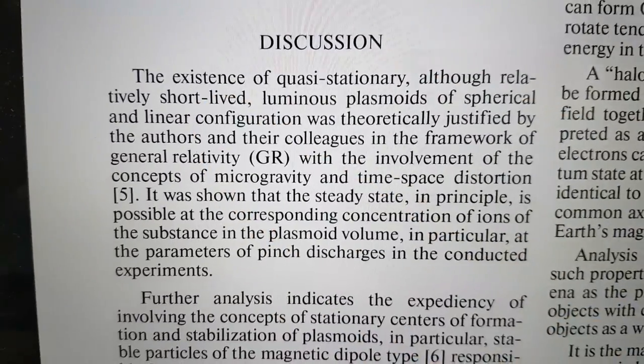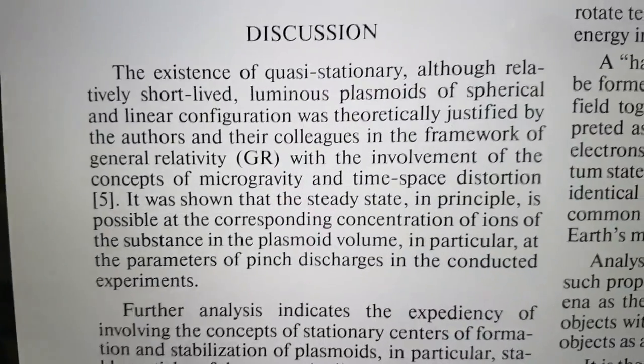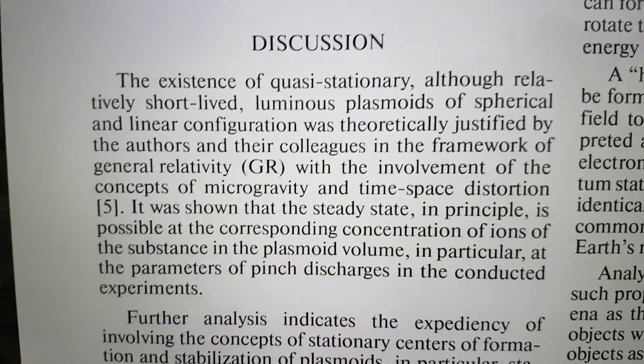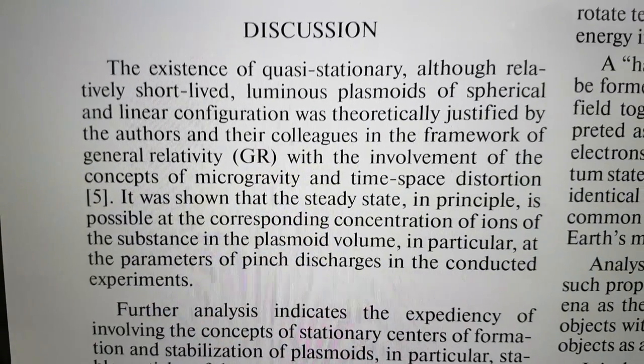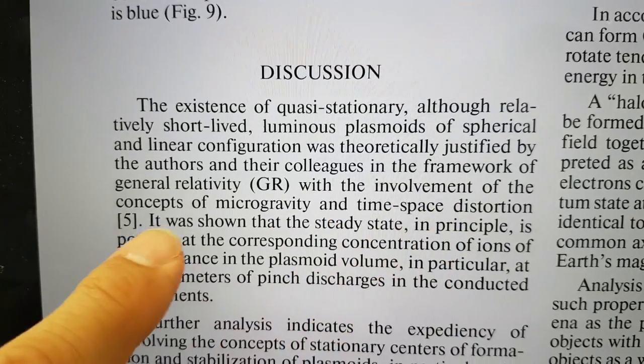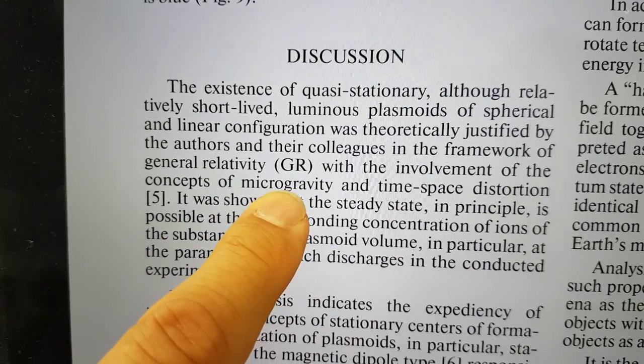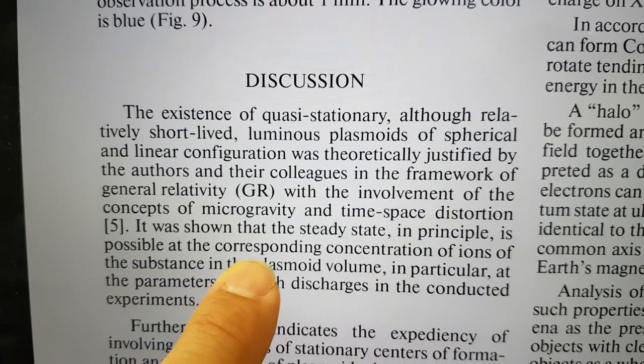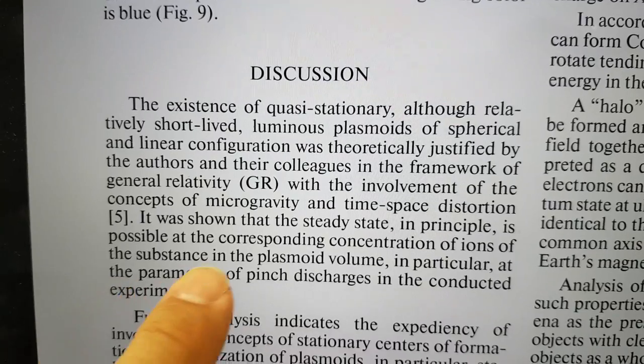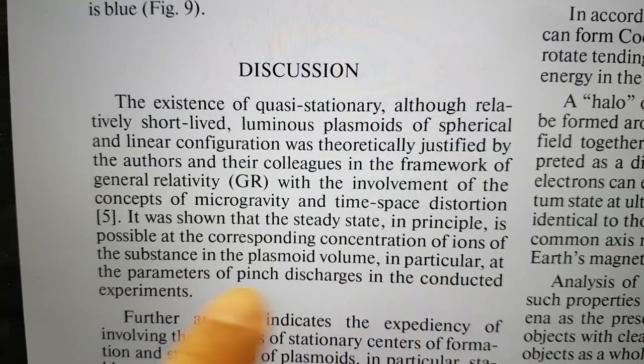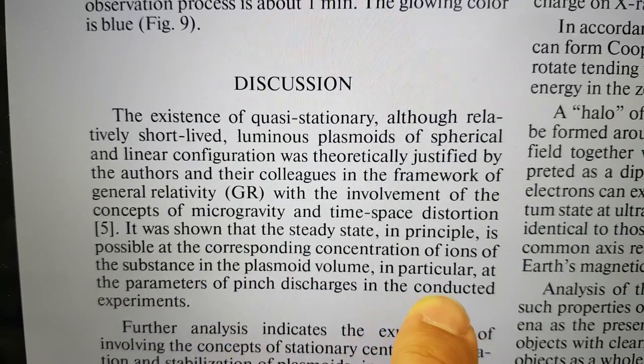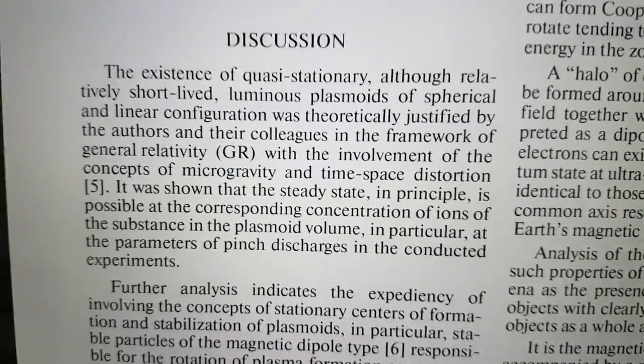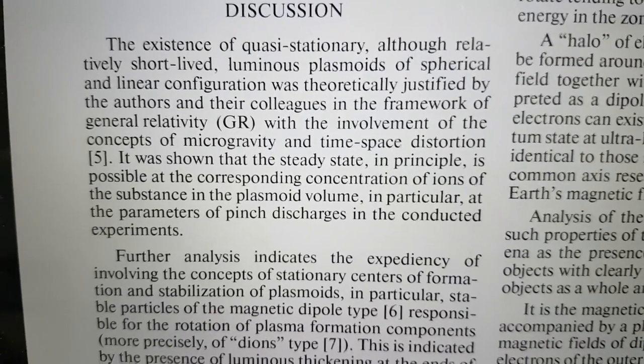I don't want to go through everything in this paper, but here we go. The existence of quasi-stationary, although relatively short-lived luminous plasmoids, a spherical and linear configuration was theoretically justified by the authors and their colleagues in the framework of general relativity with the involvement of the concepts of microgravity and time-space distortion. It was shown that in steady state, in principle, it is possible at the corresponding concentration of ions and the substance in the plasmoid volume, in particular at the parameters of pinch discharges in the conductive experiments. I'm not reading this very well, but I had to come into the office and just do this. I'm meant to be taking time off. But really, you seriously must read through this.